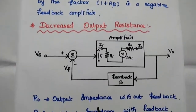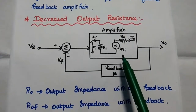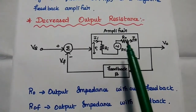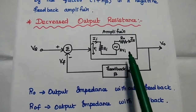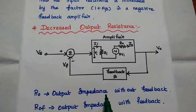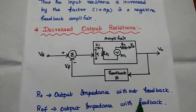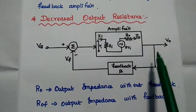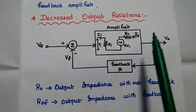The next property is Decreased Output Resistance. We consider a small-signal equivalent circuit of the amplifier, which contains input resistance RI, output resistance RO, current II, amplified output A·VI, and current through RO denoted as IO. RO is the output impedance without feedback, and ROF represents the output impedance with feedback. The negative feedback decreases this output impedance value.